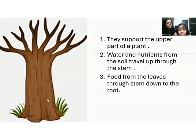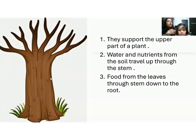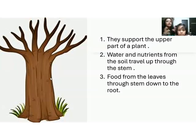This is the stem. Do you have any idea what is the function of stem? Stem supports the upper part of the plant. We know that roots absorb water and minerals from the soil, but how do the water and minerals transfer to the other parts of the plant? With the help of the stem. Stem transfers all the water and nutrients to the other parts of the plant, because all plants need energy and require water and minerals.